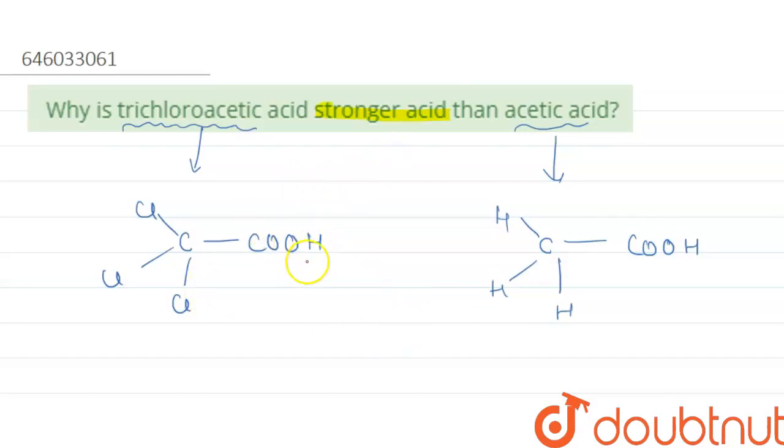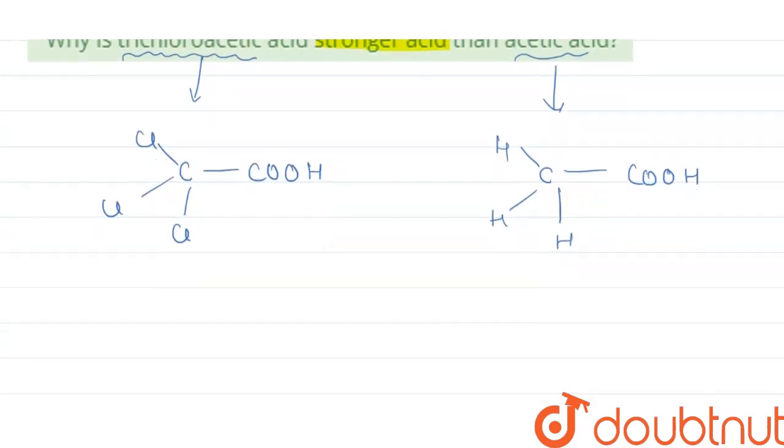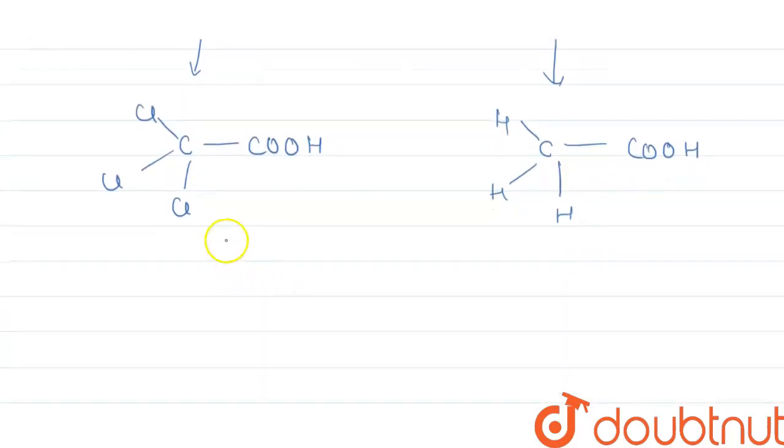Now, this is a stronger acid. Why? To check acidic nature, you always have to make the conjugate base. How to make the conjugate base? Remove one hydrogen—the acidic hydrogen in both—so